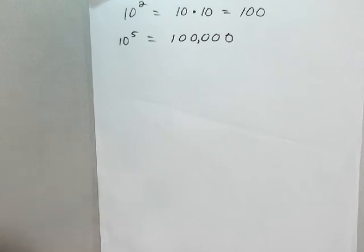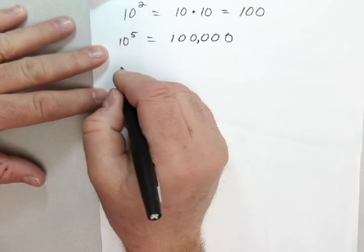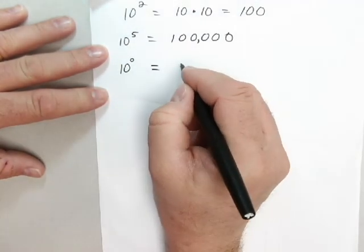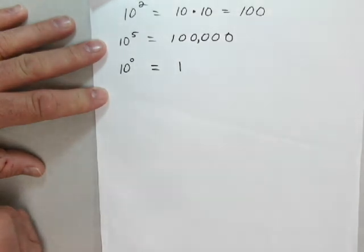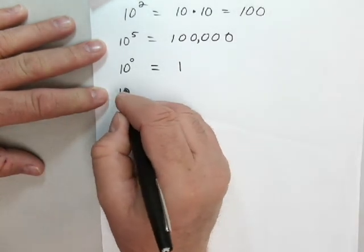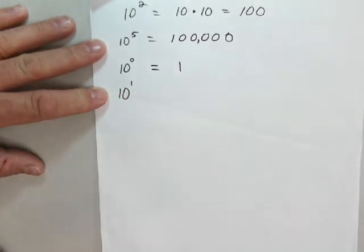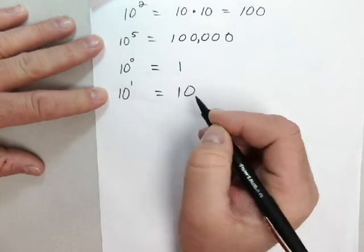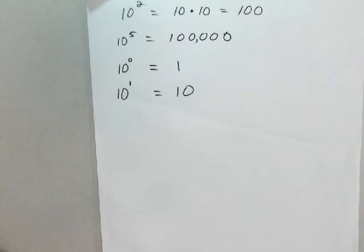We know that 10 to the second power, what does that mean? It means 10 times 10, so it's 100. Two zeros, power of two, two zeros. 10 to the fifth power would just be a one with five zeros. We had a couple special cases.